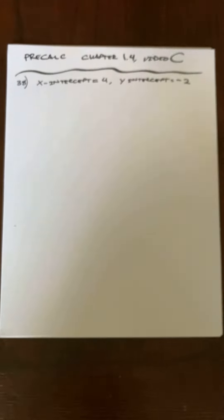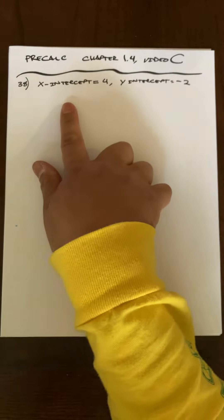All right, here's the third video for this chapter. It's the same as the last video in that they want the point-slope form of the line and the slope-intercept form, and the information is a little bit different.